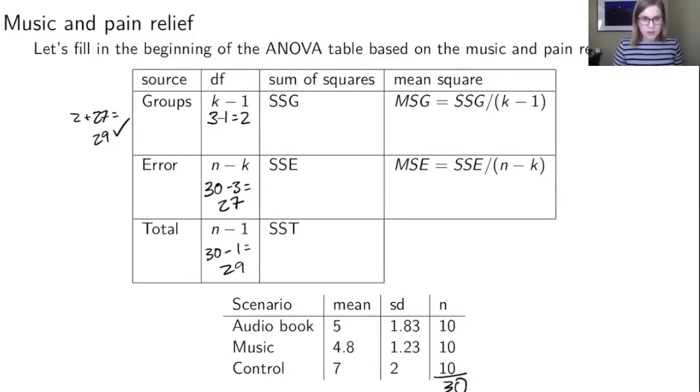And then the other pieces that we need to figure out are the sum of squares for the groups and the sum of squares for either the error or the total. Like I said I only ever compute two of them based on the formula and then I'll just do subtraction for the third piece. So let's start with SSG and that's the sum of n sub i of x bar i minus x bar squared.